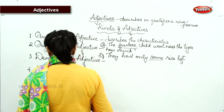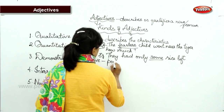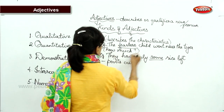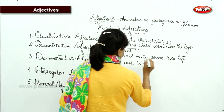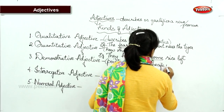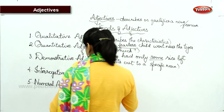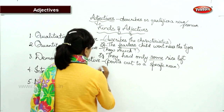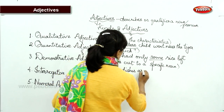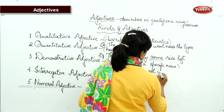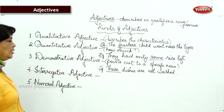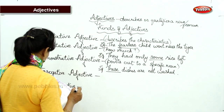The demonstrative adjective points out to a particular or specific noun. For example: 'These dishes are not washed.' Here, 'these' points out to specific dishes. Words like this, that, these, and those are demonstrative adjectives because they point out to a specific noun.